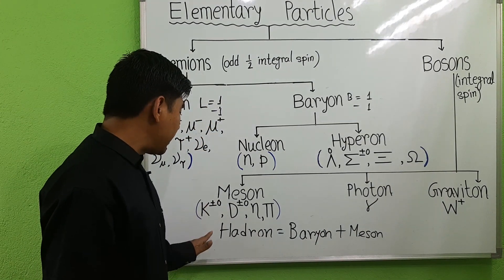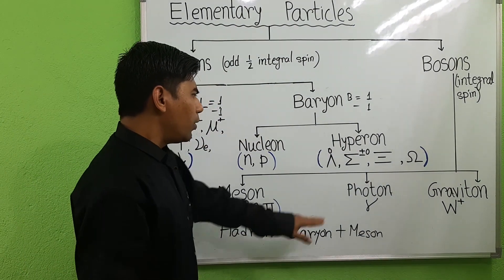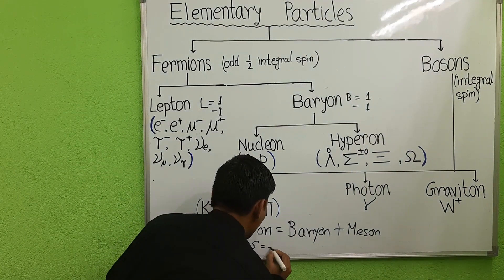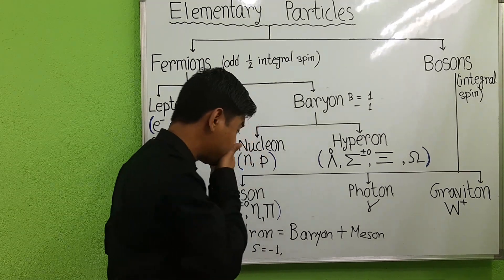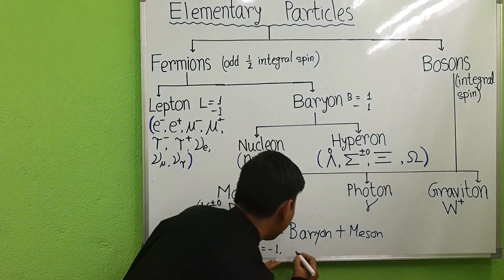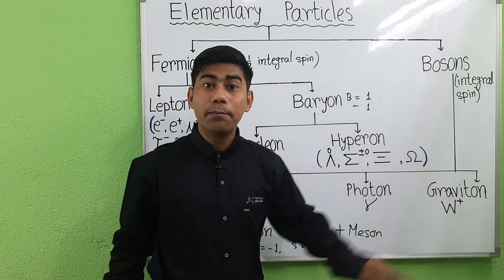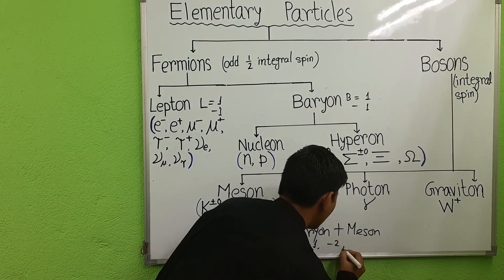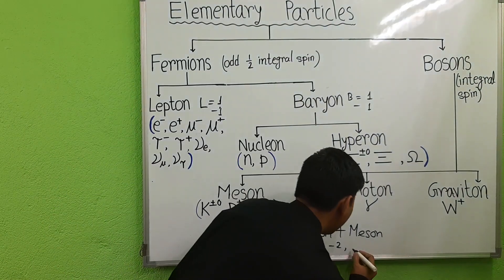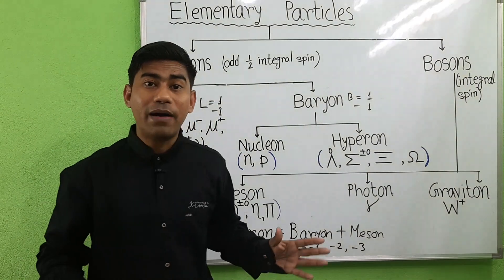The strangeness quantum number S applies to kaons and hyperons. For the lambda 0 particle, the value of S is minus 1. For the sigma particle, S is minus 1. For the cascade particle, S is minus 2. And for the omega particle, S is minus 3. So these are the strange particles.